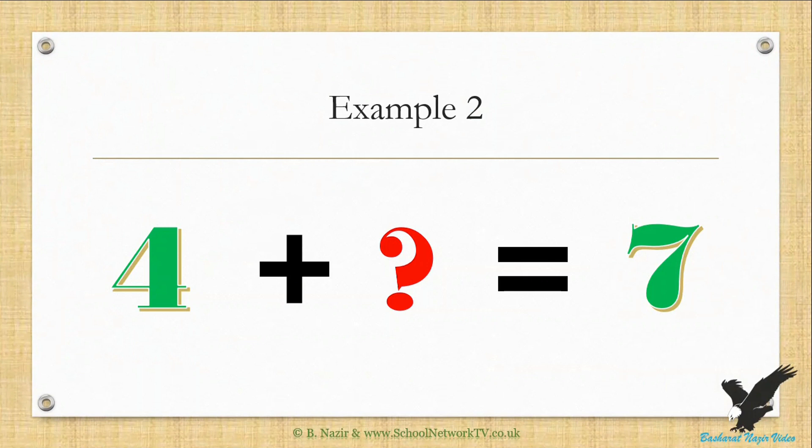There is no balance on both sides. To make both sides equal we need to add 3 to the left side. The answer is 3.